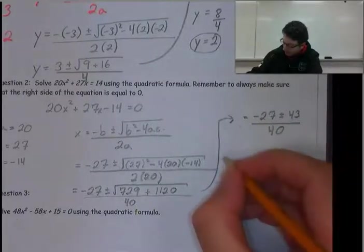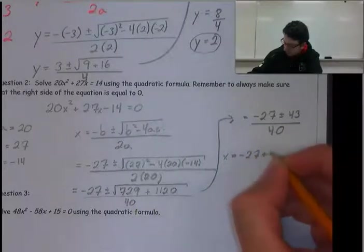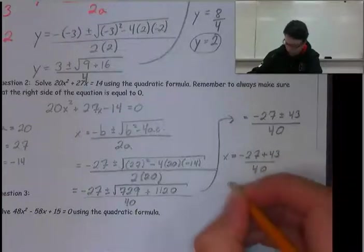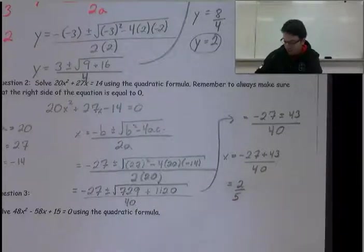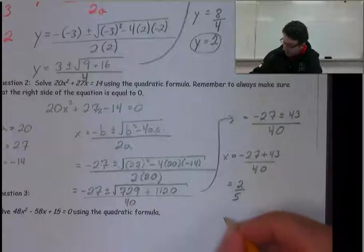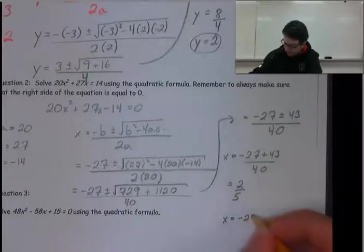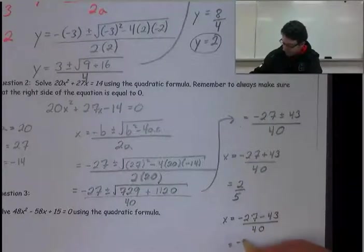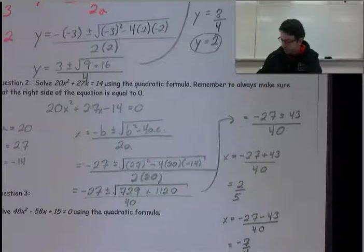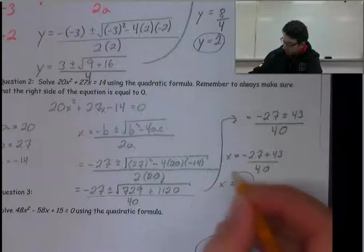The square root adds to 1,849, and if you take the square root of that, you get 43. So this equals (-27 ± 43) / 40. We need to figure out our two roots. x = (-27 + 43) / 40, which reduces to 2/5, and x = (-27 - 43) / 40, which reduces to -7/4. Those are our two roots.